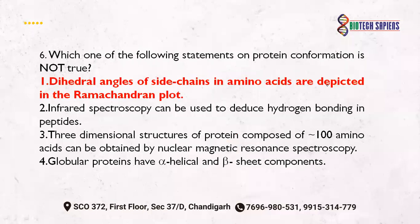Which one of the following statements on protein conformation is NOT true? Statement: dihedral angles of side chains in amino acids are depicted in the Ramachandran plot. In the Ramachandran plot, we discuss dihedral angles around the peptide bond backbone carbons — it does not tell you about the side chain dihedral angles of amino acids. So this statement is incorrect. Another fact to remember: from infrared spectroscopy you can deduce hydrogen bonds.